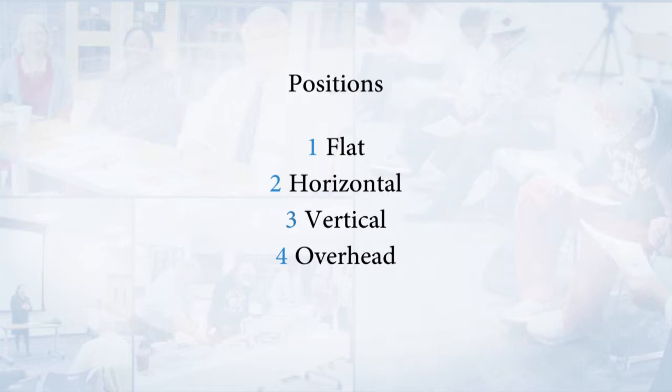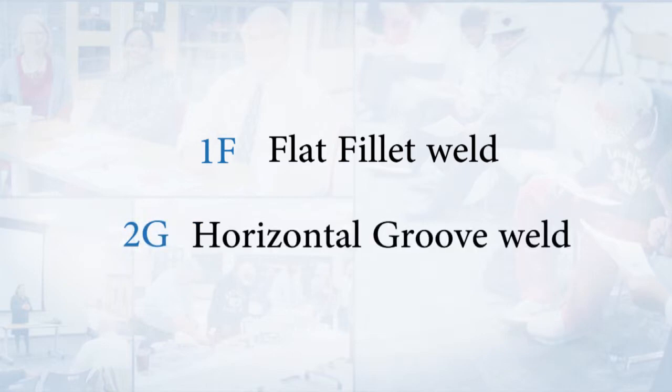I didn't draw a picture for vertical because you're basically looking at the face of the weld when you're doing vertical, and we have some pieces that we'll look at to go through that. When you see a position, if we see 1F, that's a flat fillet weld. 2G, that is a horizontal groove weld.